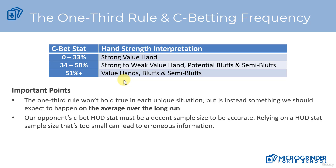How we react to that is important — that's going to be an exploitative adjustment to our play. For example, if we have a nit that's only c-betting 25% of the time over a very large sample size of hands, and we flopped middle pair with a decent kicker, if they are c-betting, we can simply exploitatively fold our hand.